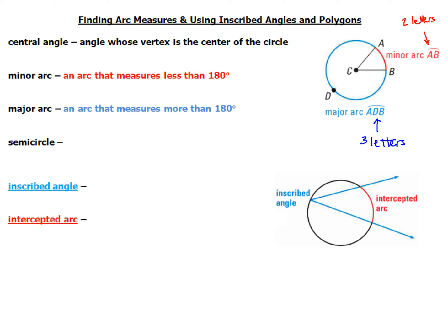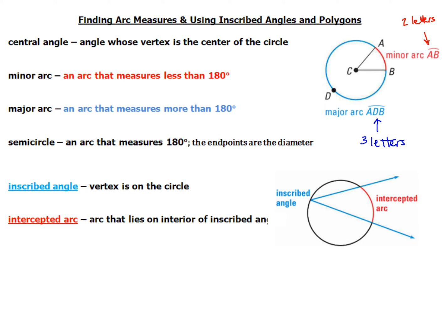The next piece is the semicircle, which you probably already know. It's an arc that measures 180 degrees, and the endpoints of the semicircle are going to be the diameter. We've also got an inscribed angle and an intercepted arc. The inscribed angle has its vertex lying right on the edge of the circle, and the arc that it intersects — the intercepted arc — lies on the interior of the inscribed angle.